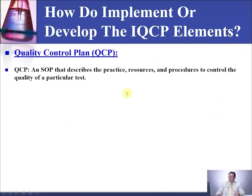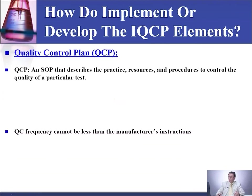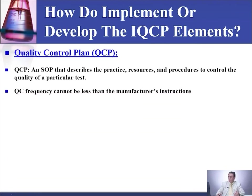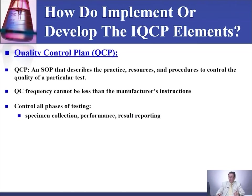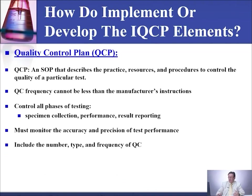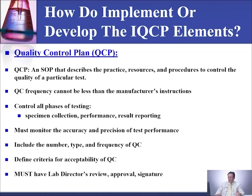The quality control plan is an SOP that describes the practice, resources, and procedures to control the quality of a particular test. QC frequency cannot be less than the manufacturer instructions. It must control all phases of testing — specimen collection, performance, and result reporting — and must monitor the accuracy and precision of test performance. It should include the number, type, and frequency of QC, and define criteria for acceptability of QC. It must have the lab director's review, approval, and signature.